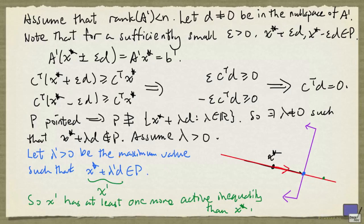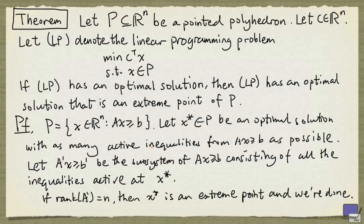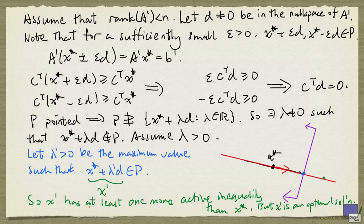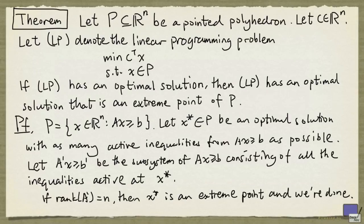But what is the objective function value of this? Well it's the same as c^T x* because c^T d is 0. Therefore, x' is an optimal solution as well. And that's a contradiction. Because we have chosen x* to be an optimal solution with the largest number of active inequalities possible. But we have found another optimal solution with at least one more active inequality. That means that the assumption here is false, and so x* must be an extreme point. And that proves the theorem.